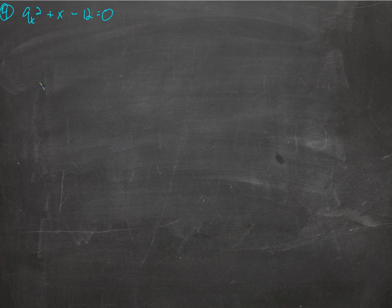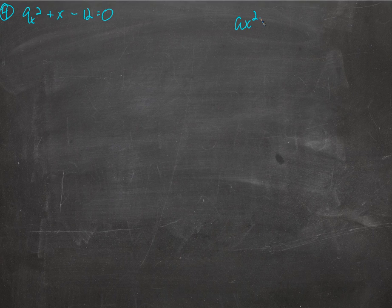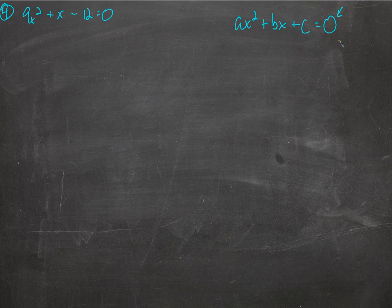We're learning to use the quadratic formula here. Whenever we have a quadratic equation that looks like this — ax squared, that's something times x squared, plus bx, that's something times x to the first power, plus c, some constant — it definitely has to be equal to 0. If there's a 5 over here, subtract 5 from both sides so you have 0 on this side. That's very important.